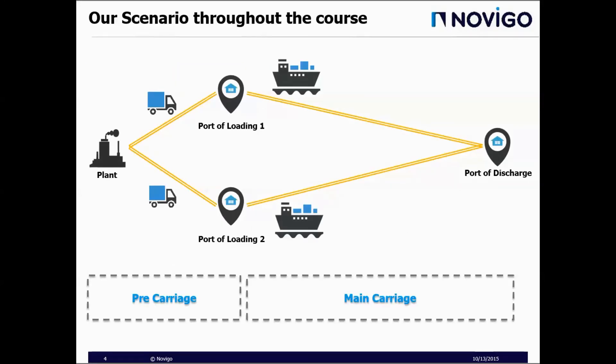This is the scenario we work on throughout the course. Our company produces and exports chemical products. We build containers at our plant and send them overseas to our customers. Our goal is to send those containers to the port of discharge. To do that, we have two options: we can use port of loading one or port of loading two. We choose the port of loading during the planning stage, considering the schedules. Our transportation network has two stages: stage one, or pre-carriage, is a road leg done by trucks; and stage two, or main carriage, is an ocean leg done with ships.